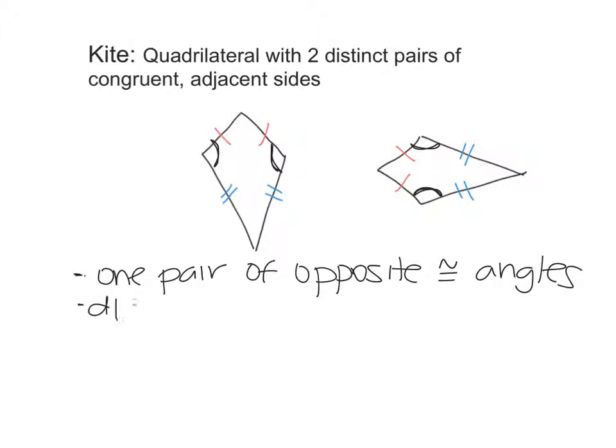We know that the diagonals are perpendicular. So if I draw myself a kite, this diagonal and this diagonal, they form 90-degree angles.